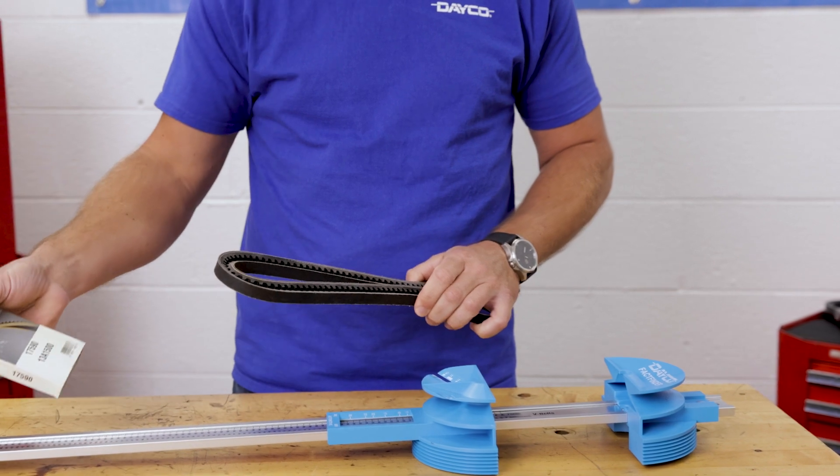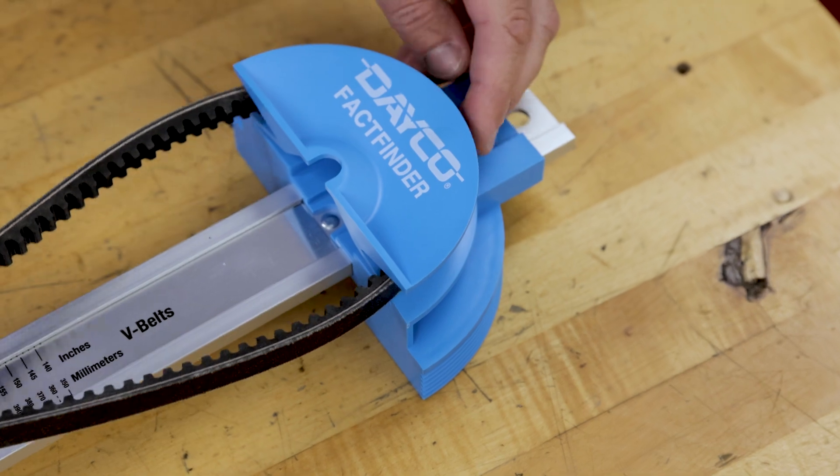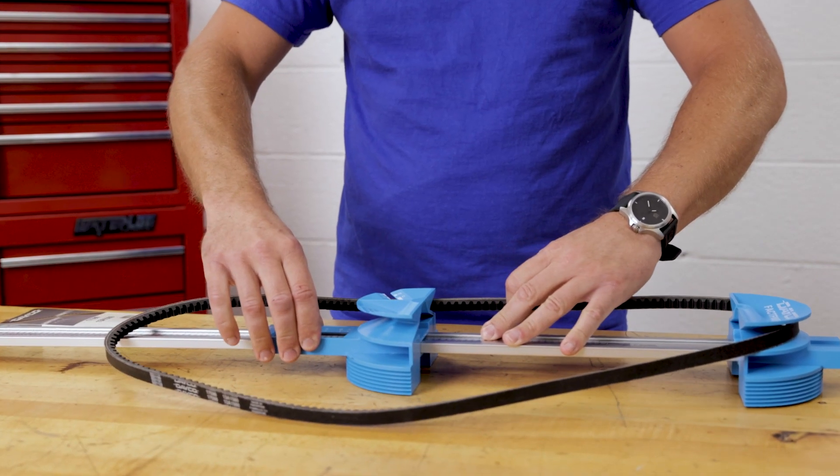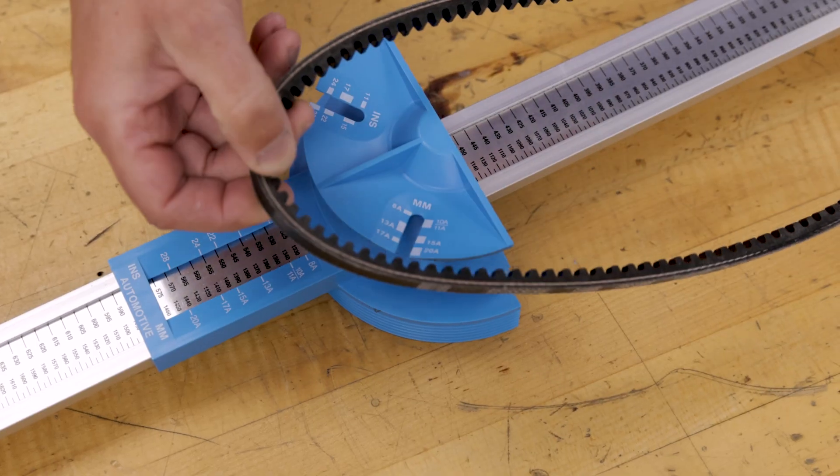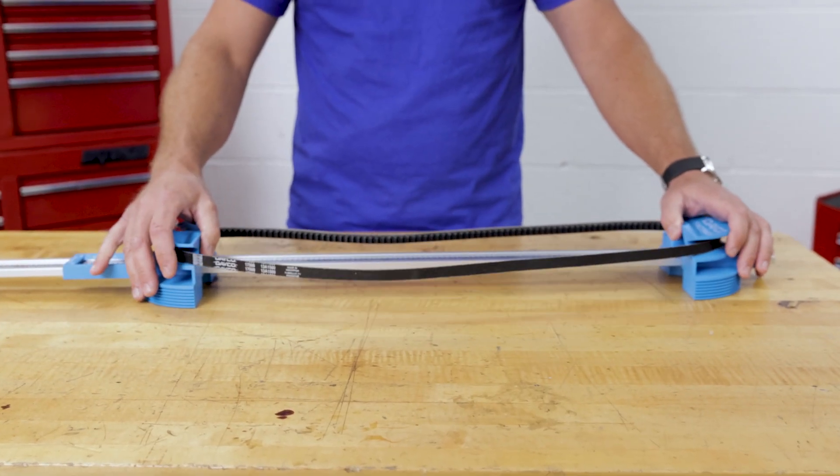To use the tool, start by placing the v-belt on the top mount like this. Slide the bottom mount downwards. Place the v-belt in the bottom mount. Then pull the belt as tightly as you can.